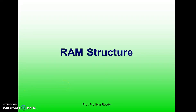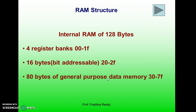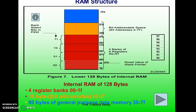Let us discuss the memory organization of the 8051 microcontroller. The internal RAM is 128 bytes. This 128 bytes of internal RAM is organized into four register banks from 00 to 1F, 16 bytes of bit-addressable memory from 20 to 2F, and 80 bytes of general purpose data memory from 30 to 7F.